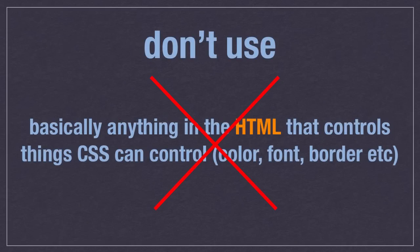Overall, don't use anything in HTML that controls things CSS can control — colors, fonts, borders, etc. And one of the other big things, which we'll see in later videos, is to not use tables for your layout, because then you're using HTML to control layout instead of using CSS in your style sheets. HTML is really just supposed to mark things up and say what they are, and then CSS in a separate file will control how they look.